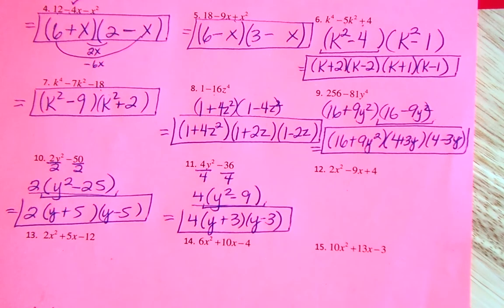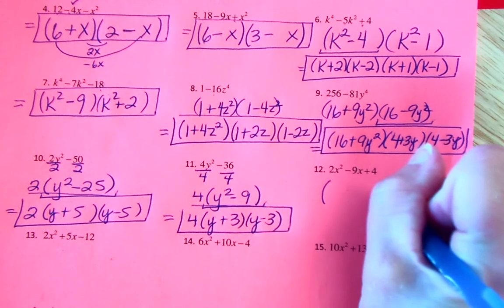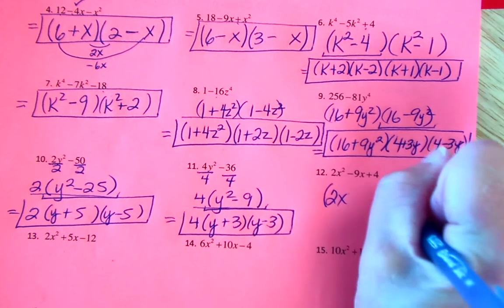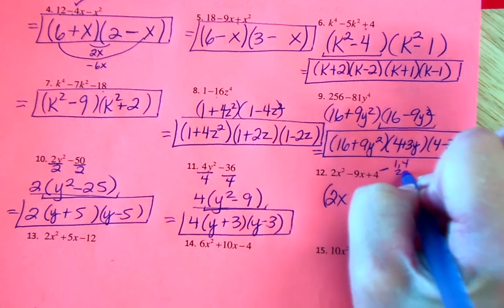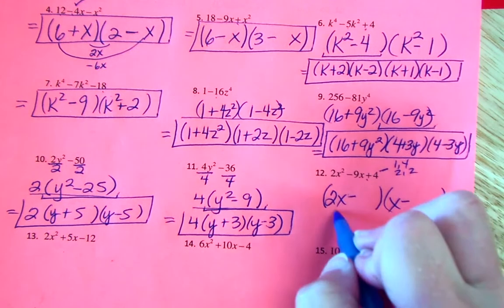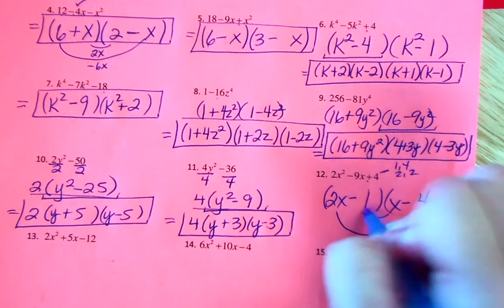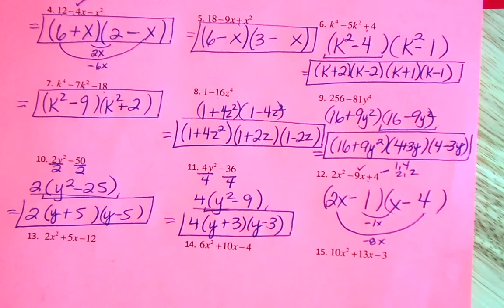Number 12: there is no GCF — 2 is a factor of 4 but not of 9 — so this is factoring where the leading coefficient is greater than 1. It's going to be (2x)(x). Factors of 4: 1 and 4, or 2 and 2. Signs are the same — multiplies to positive — and both negative in the middle. Whatever number we put here, we double and add the other to get 9. Double the 4 to get 8, add 1 to get 9. So we have negative 1x and negative 8x to get negative 9x.